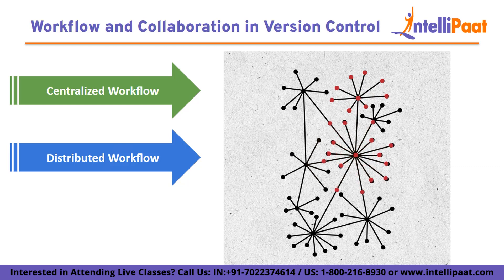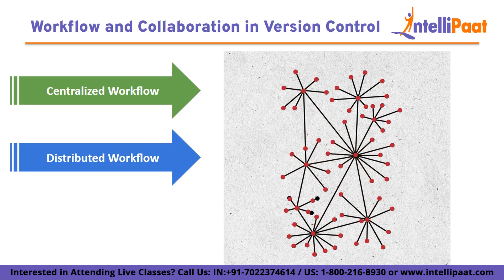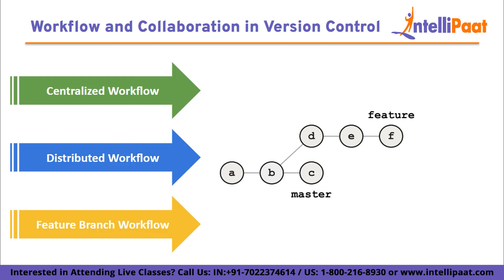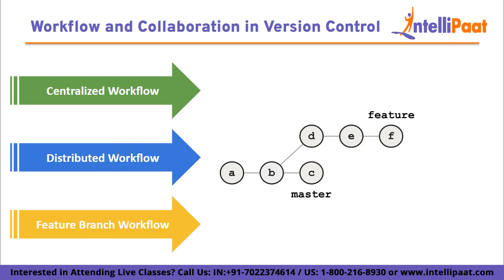Distributed workflow: in a distributed workflow, each team member has their own copy of the repository. Developers can commit changes locally and synchronize them with other repositories. This allows for more independence and flexibility, enabling developers to work offline and merge changes at a later stage. Feature branch workflow: this workflow involves creating separate branches for different features or tasks. Developers work on their respective branches, making changes and testing them independently. Once a feature is complete, it is merged back into the main branch, enabling parallel development and easy tracking of individual features.